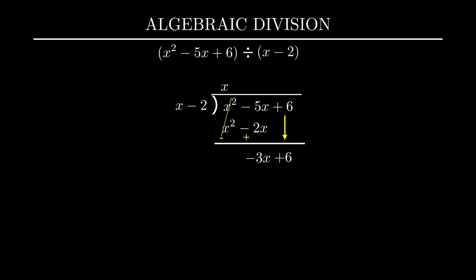Next we'll divide -3x and x. -3x by x is -3. Now take this -3 and multiply it with the divisor x-2.